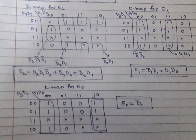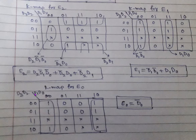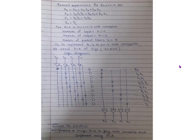Similarly for the KMAP for E1: there are two groups. For the first group, D3 and D2 don't come, D1 is 0 and D0 is 0, giving D1̄·D0̄. For the second group, D1 is 1 and D0 is 1, giving D1·D0. For another group of eight, D3 and D2 don't come, D1 varies and cancels, and D0 is 0, giving D0̄. These are the expressions for E1 and E0.